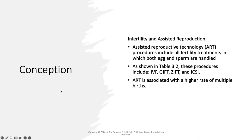Regarding infertility and assisted reproduction, assisted reproductive technology — also known as ART — includes all fertility treatments in which both egg and sperm are handled. If you look at Table 3.2 in the text, you will see more about the processes. In vitro fertilization, or IVF, is a very common procedure that uses ART. ART is associated with a higher rate of multiple births.